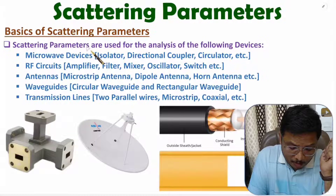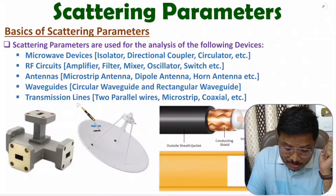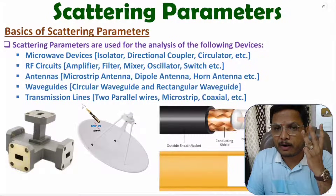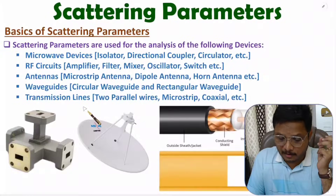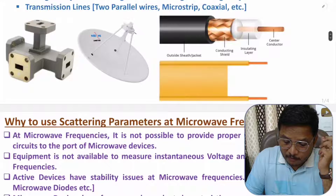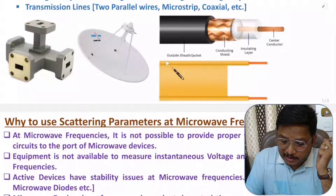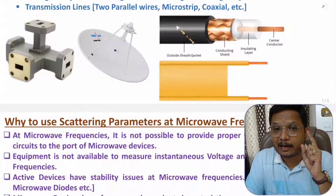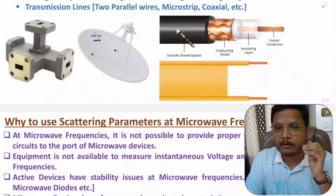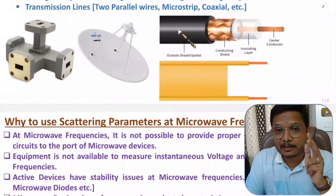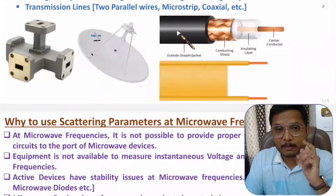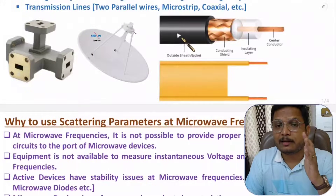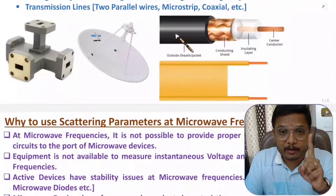Scattering parameters are also used to analyze transmission lines. In this microwave engineering video lecture series, I have covered three categories of transmission lines: two parallel wire transmission line, coaxial cable transmission line, and microstrip transmission line. So transmission line analysis can be done using scattering parameters. One thing that should be clear: scattering parameters are used at microwave frequencies.